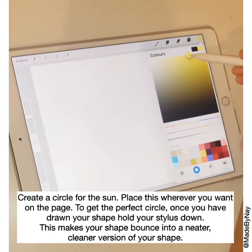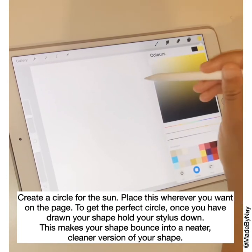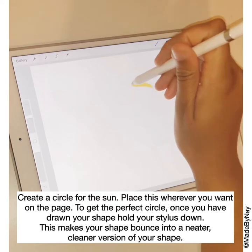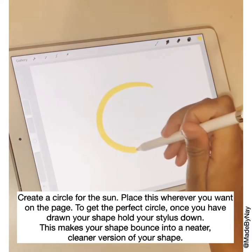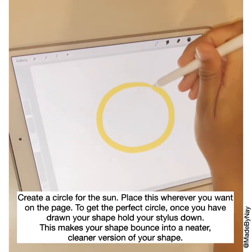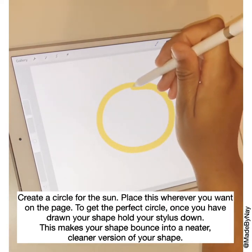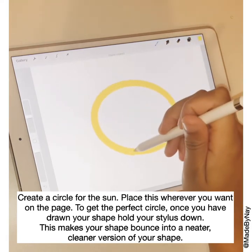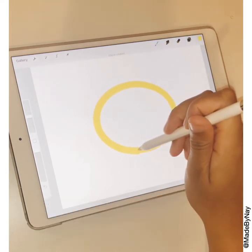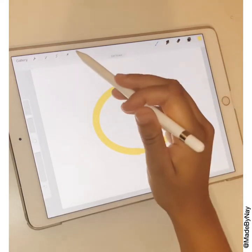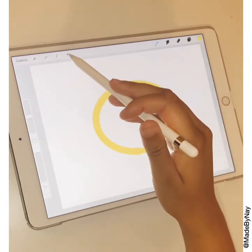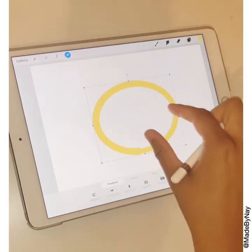To do this you just select your color and then draw a circle or more of an oval shape, however you want it to look. You can hold your stylus down on your page and that will help the shape snap into a neater version of the shape that you've drawn.